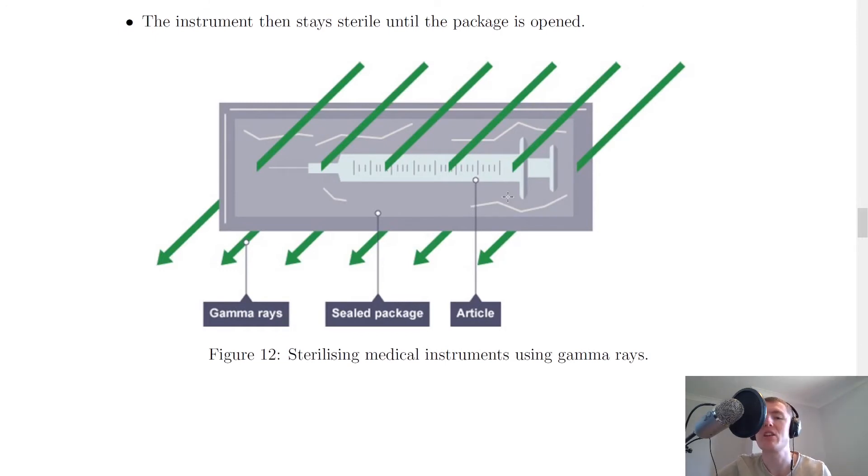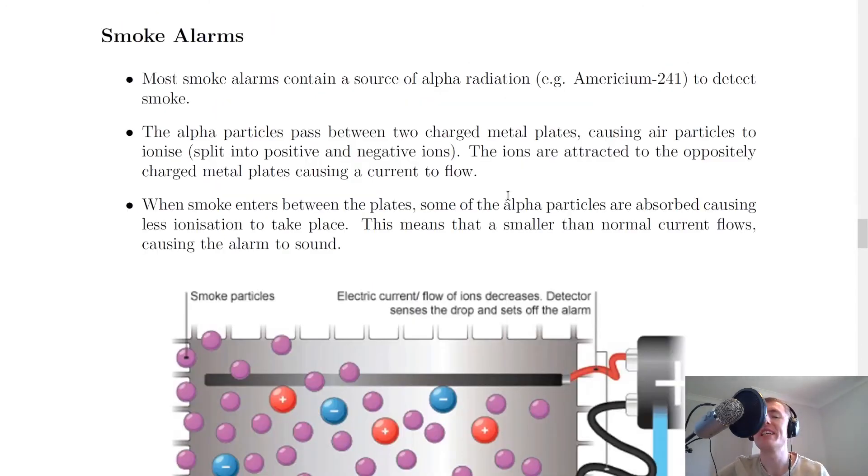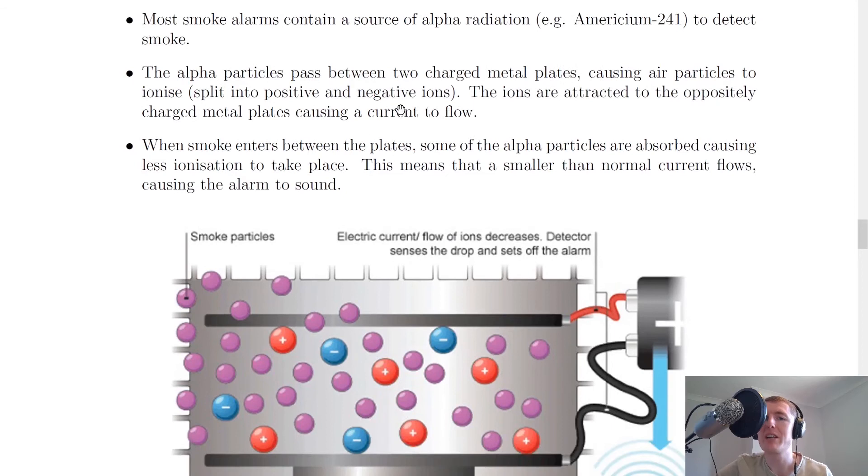Next we have a use of radiation in the home, which is smoke alarms. Most smoke alarms contain a source of alpha radiation, for example an americium-241 source, to detect smoke. The alpha particles pass between two charged metal plates, causing air particles to ionize, that is, split into positive and negative ions.